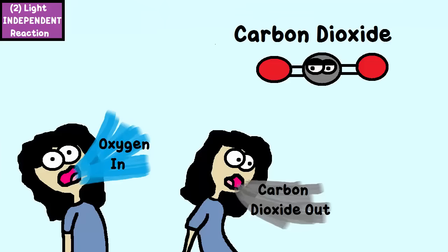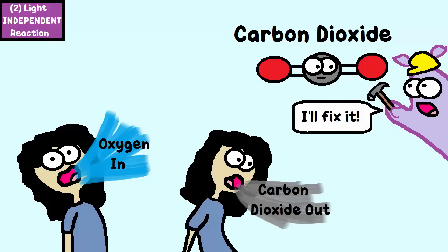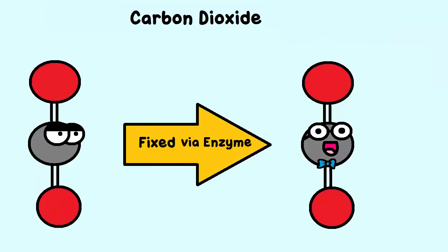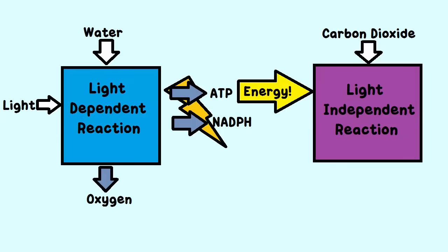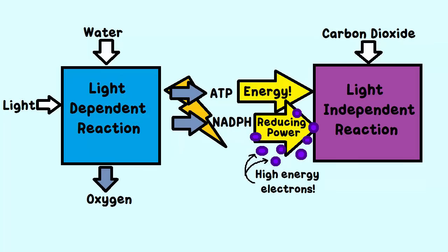In this reaction, carbon dioxide must be fixed. What do I mean by fix? Nothing was wrong with it. By fixed, I mean that, with the additional help of a major enzyme, the inorganic carbon dioxide is changed to a more usable organic form. The ATP from the light-dependent reaction helps supply energy, and the NADPH from the light-dependent reaction supplies reducing power. By that, I mean that it helps add high-energy electrons to this process.